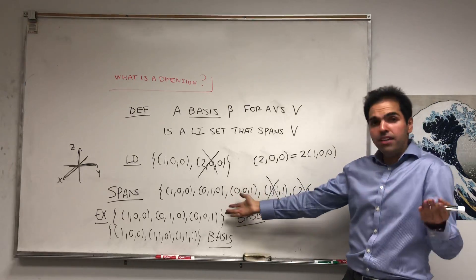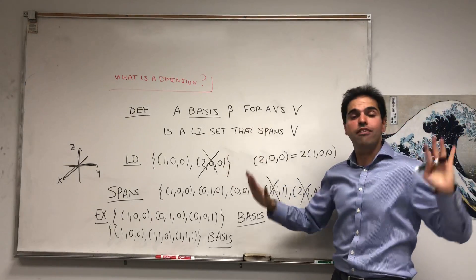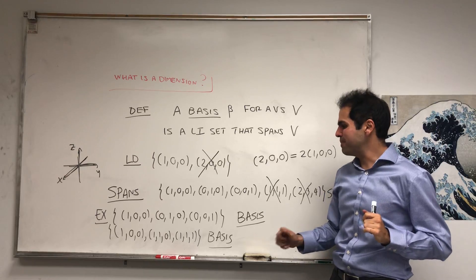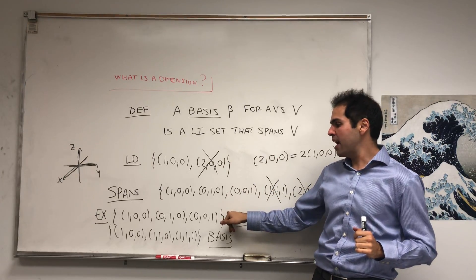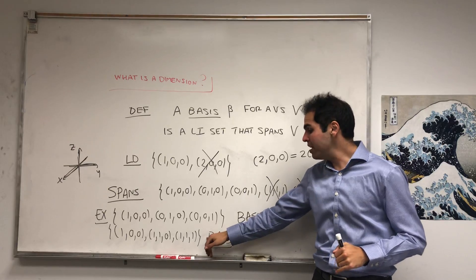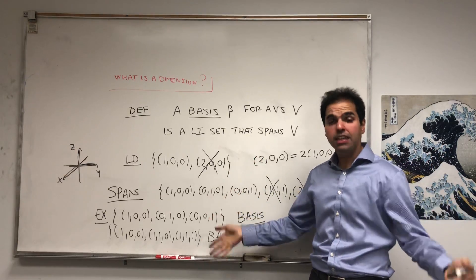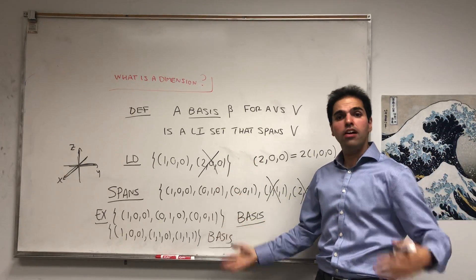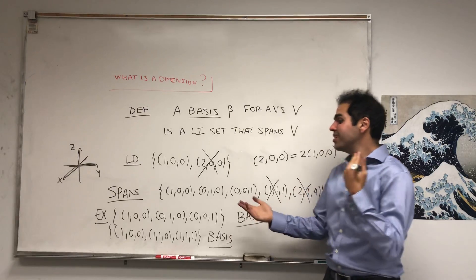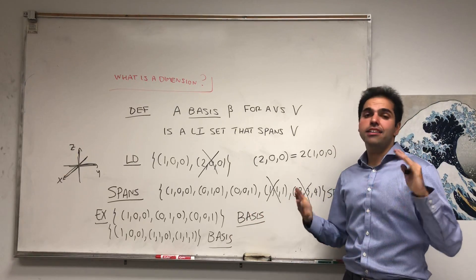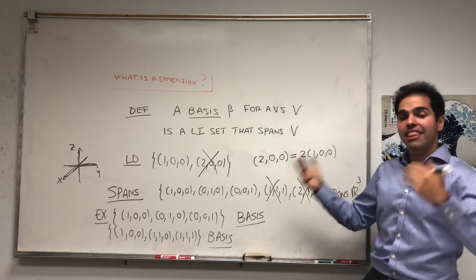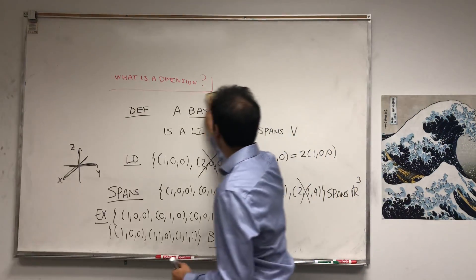So the thing is, bases are not unique. You can have different bases for the same space. But notice, how many elements does this have? Three. How many does this have? Three. So it turns out they match, and it turns out the number of vectors in any basis is always the same.